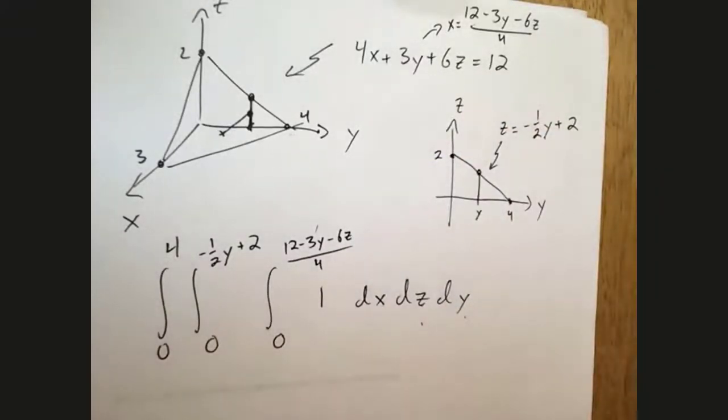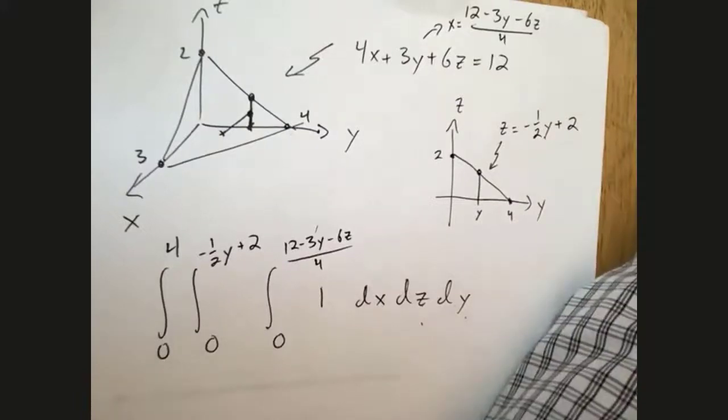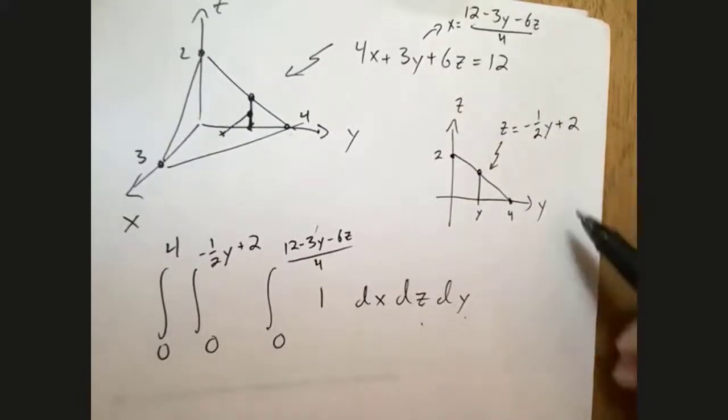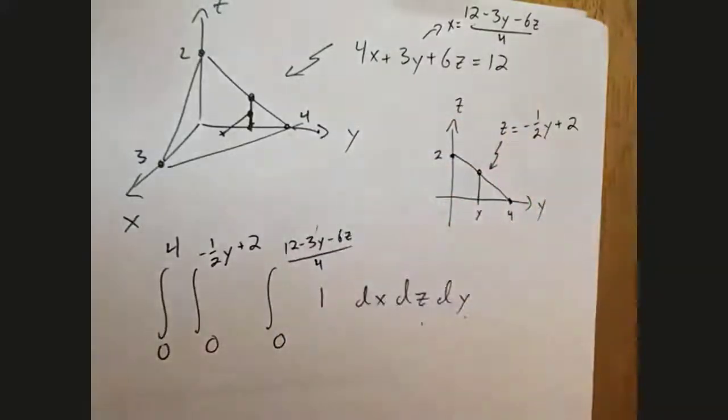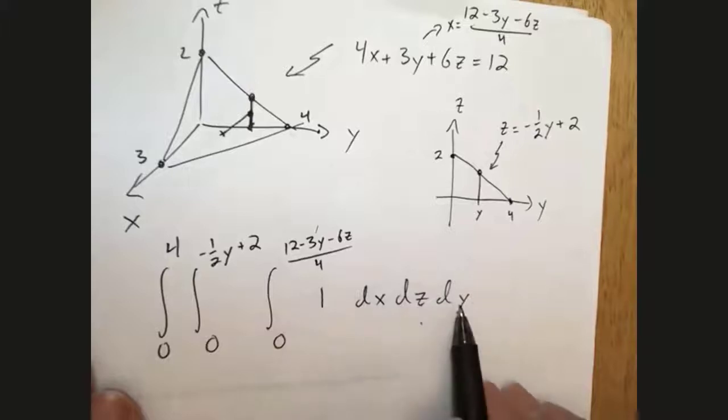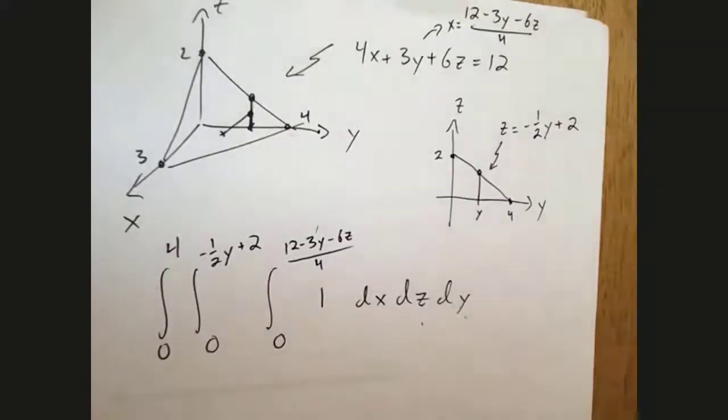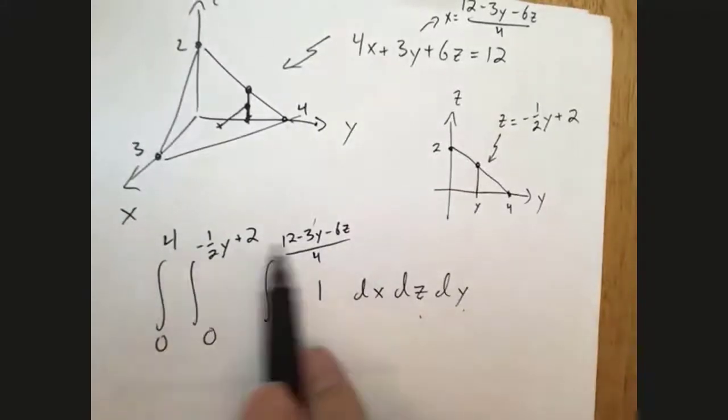That'll also get me 4. This region is super nice in the sense that you can do it in any order. It's a little bit complicated to set it up, but it doesn't matter what order you set these up in - you'll be able to find the corresponding functions for each bound.